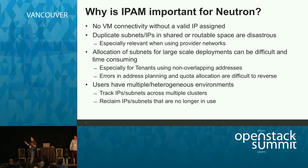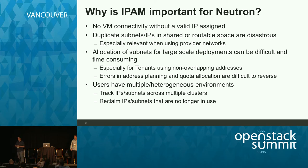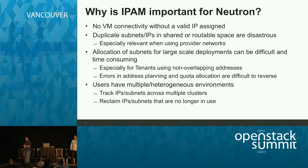So why is IP address management important for Neutron? You can't connect anything to any network unless you have an IP address. This goes for virtual machines and for any port that is created or managed through OpenStack. If you have shared networks or routable networks with provider networks between tenants, it's really critical that you manage your IP space effectively so that you don't have IP address collisions. This becomes especially critical as your cloud scales.